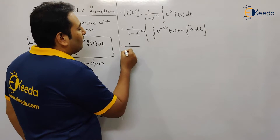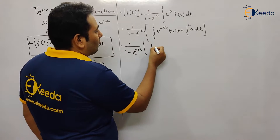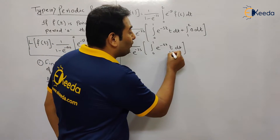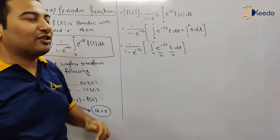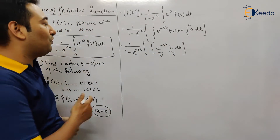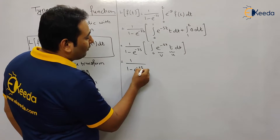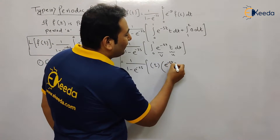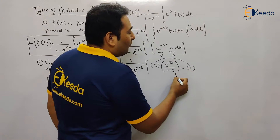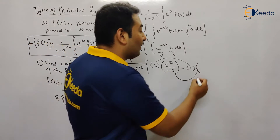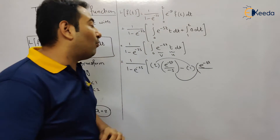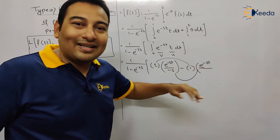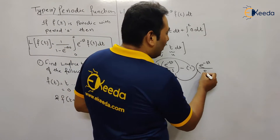We apply the UV rule (integration by parts) since we have an algebraic function and an exponential function. Using ILATE: u = t (algebraic), v = e^(−st) (exponential). Keeping u as is and integrating v: integral of e^(−st) is e^(−st)/(−s). The derivative of t is 1, and integrating e^(−st) again gives e^(−st)/s². The limits are from 0 to 1.